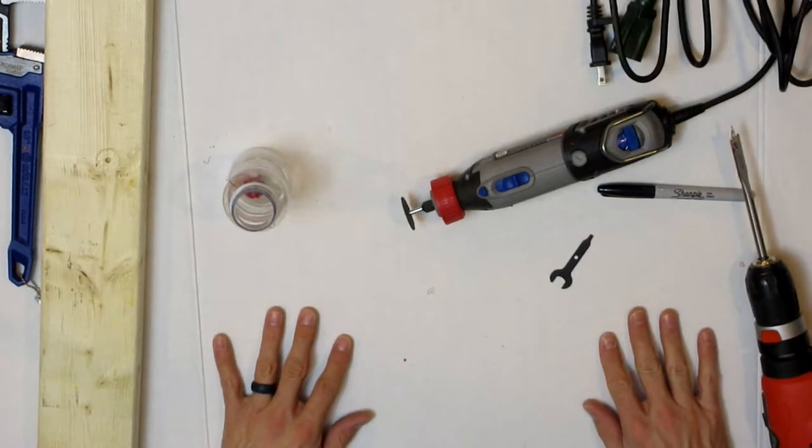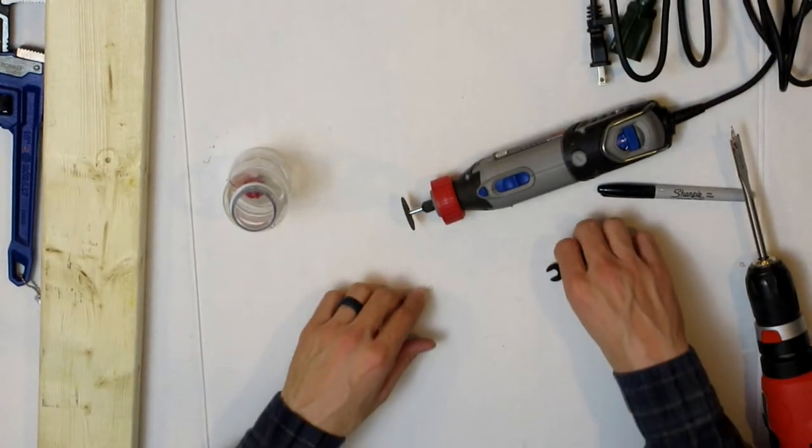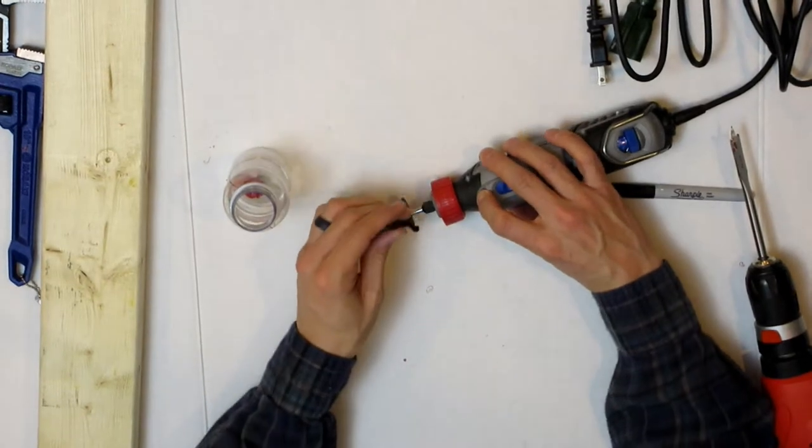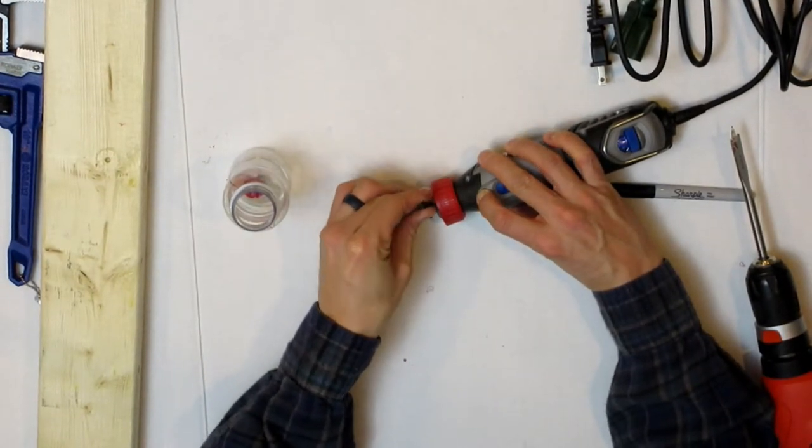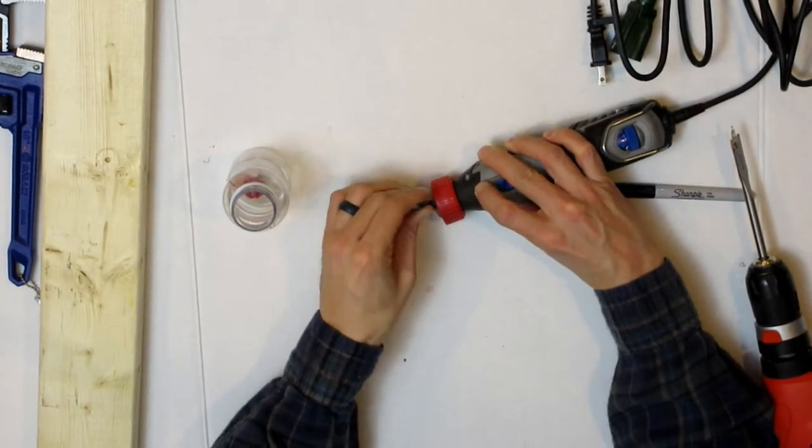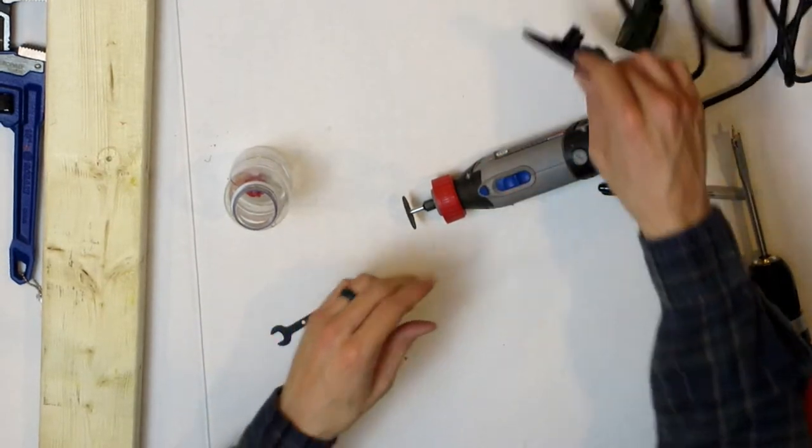So you can see here I'm just cinching down a cutting bit. Not a bit, that's not a bit, that's a reinforced cutting wheel.